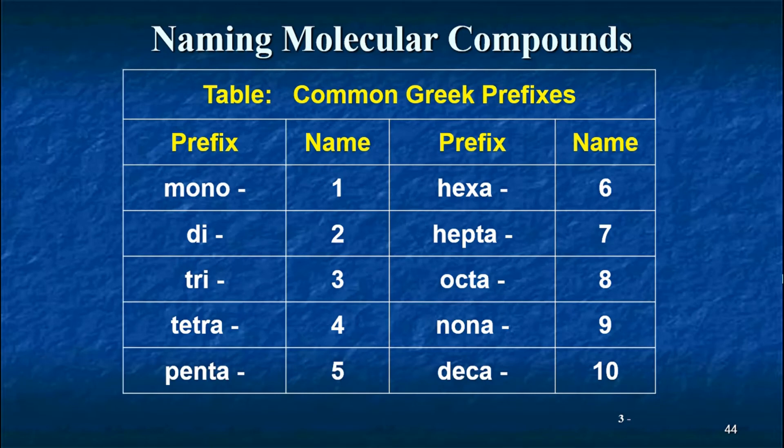So I'm going to have you memorize just the first 10: mono for one, di for two, tri for three, tetra for four, penta for five, like the Pentagon in Washington DC, hexa for six, hepta for seven, octa for eight, like the octagon in mixed martial arts, nona for nine, and deca for 10. You don't have to memorize anything beyond that, okay? We're not going to give you compounds with more than that.